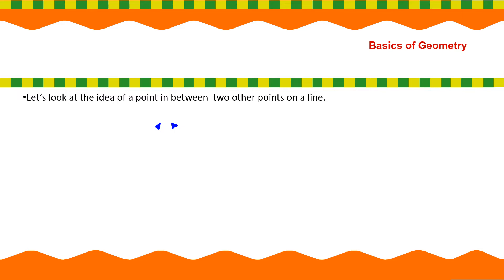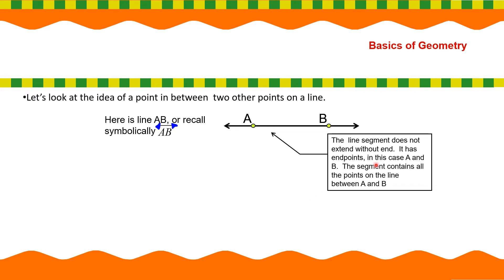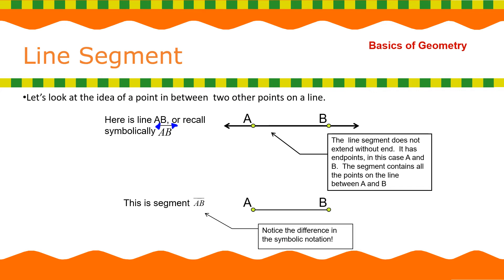Let's look at the idea of a point between two other points on a line. Okay. So, here is a line AB or we call symbolically as line AB. We are now defining line segment. And the line segment does not extend. The line segment does not extend without end. So, it has end points. It has end points. In this case, A and B. Now, the segment contains all the points on the line between A and B. So, we call it line segment. So, this is segment AB. So, notice the difference in symbolic notation. So, wala na siyang arrowhead because it's already a segment. So, that is a line segment.